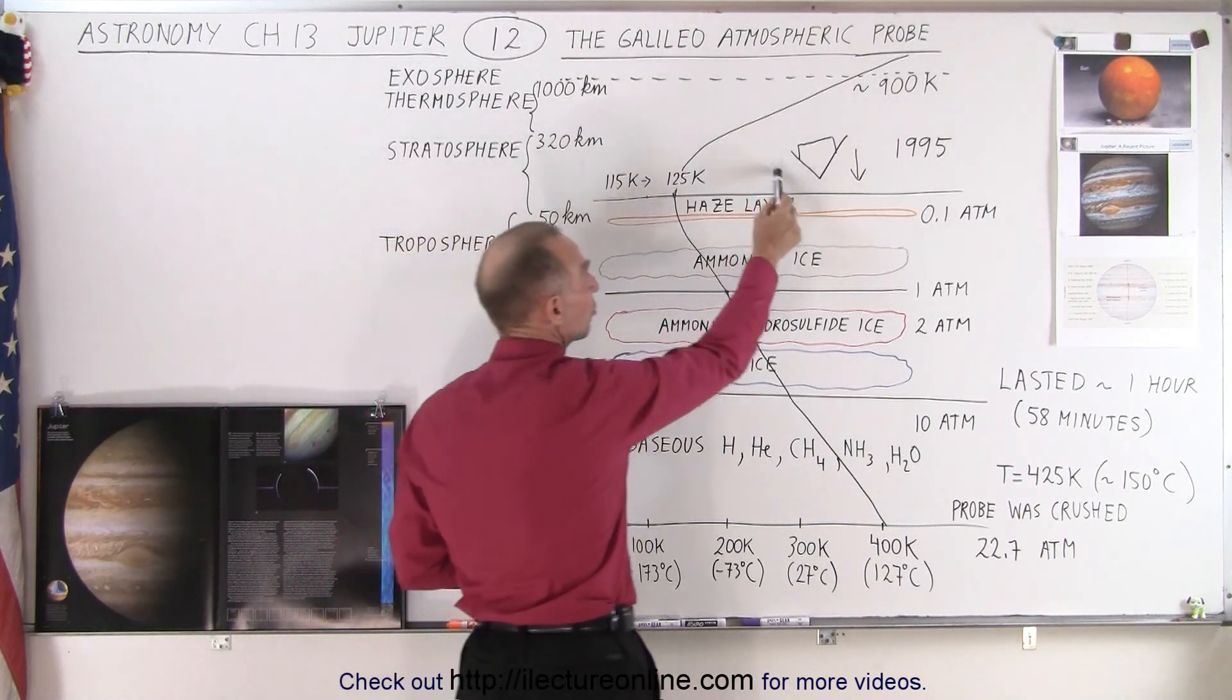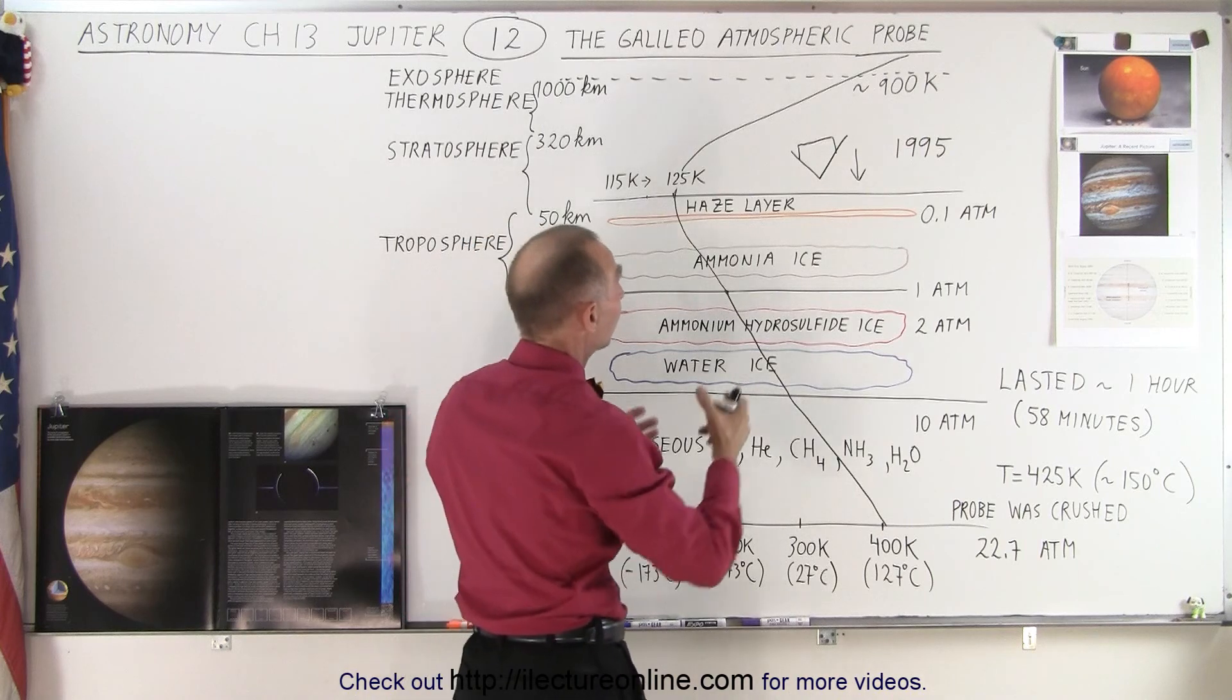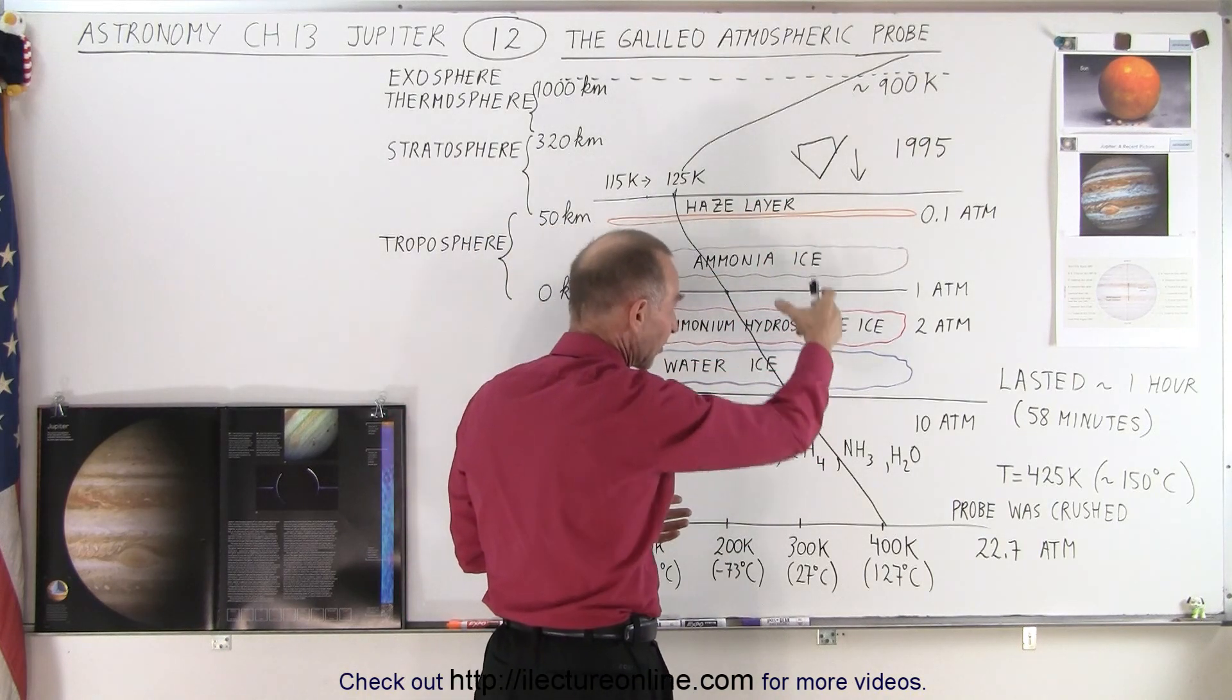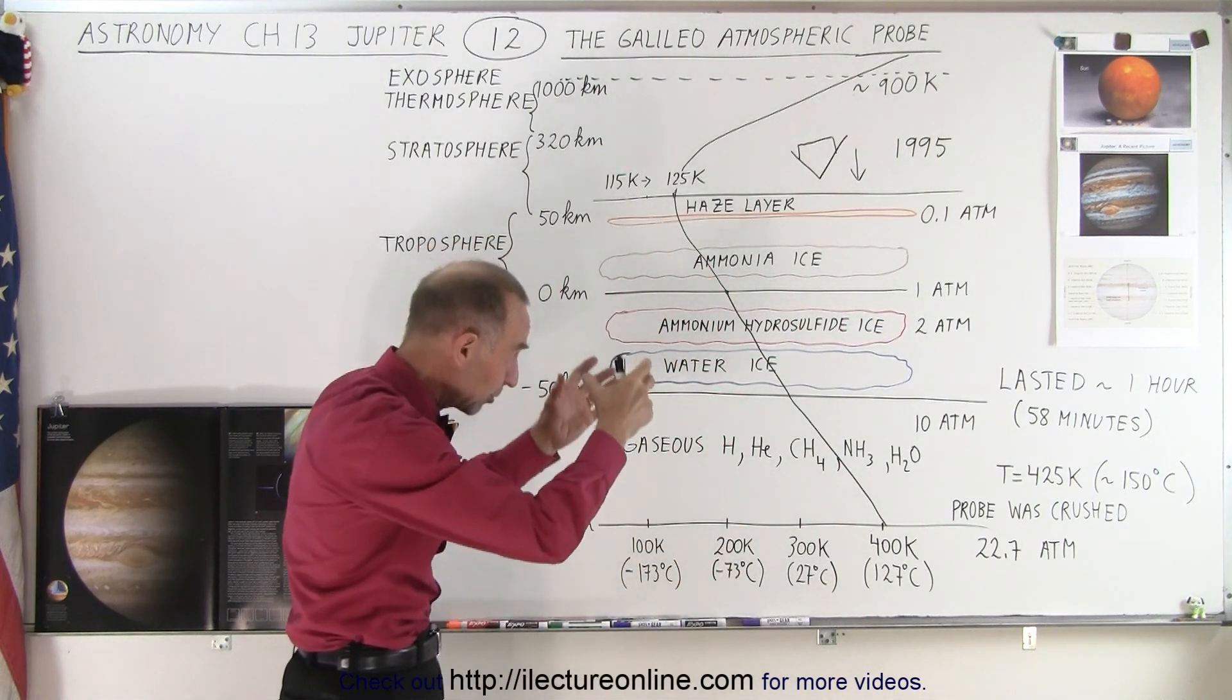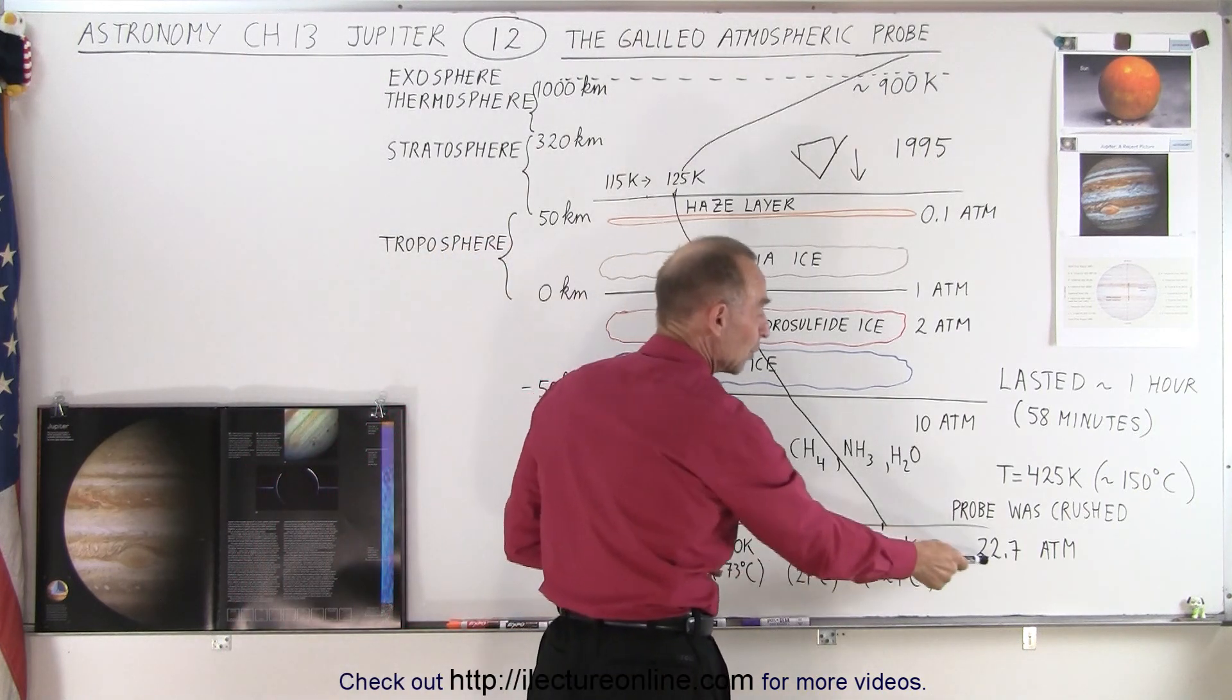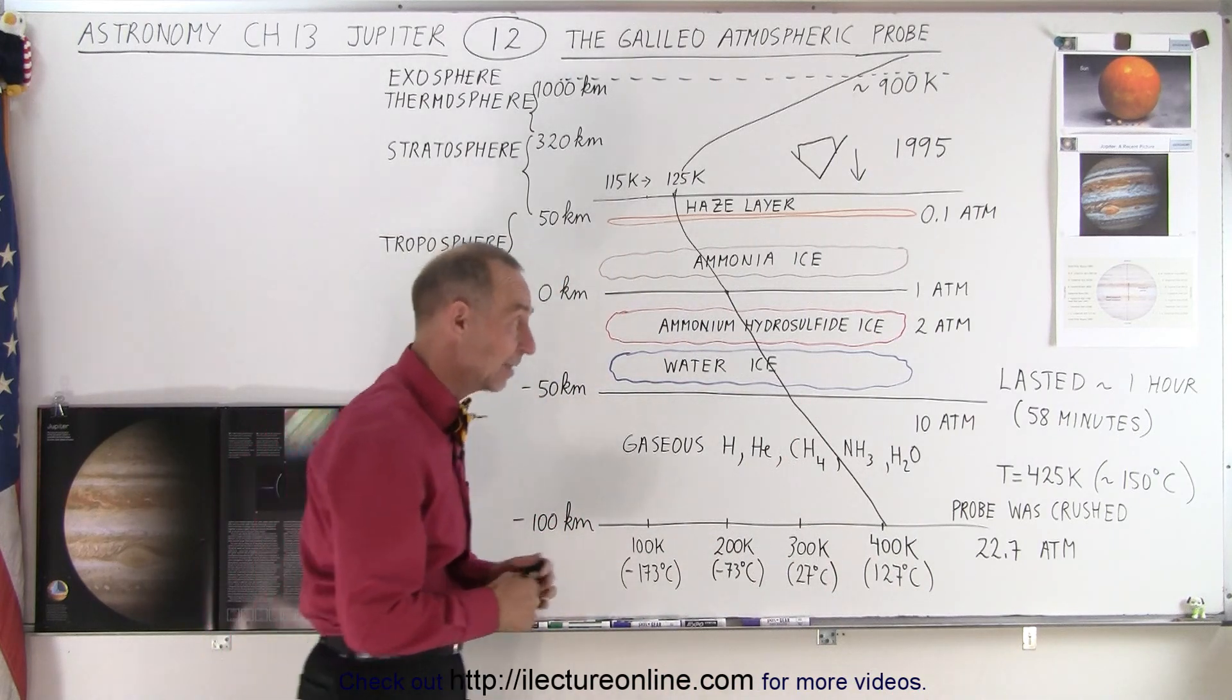It was protected by a heat shield. It was simply dropped from the Galileo spacecraft. It entered into the atmosphere, went through the atmosphere past the point where the atmospheric pressure is one atmosphere, just continued to go down and eventually was crushed when it reached a total pressure of 22.7 atmospheres.